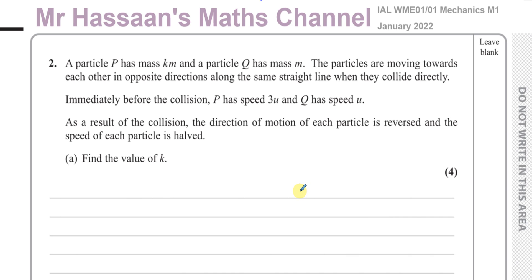This question is about momentum and impulse. It says a particle P has a mass KM, and a particle Q has a mass M. The particles are moving towards each other in opposite directions along the same straight line when they collide directly. Immediately before the collision, P has a speed of 3U and Q has a speed of U. As a result of the collision, the direction of motion of each particle is reversed, and the speed of each particle is halved. Find the value of K.